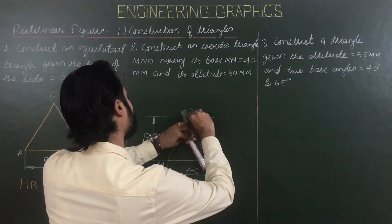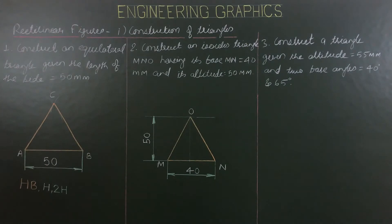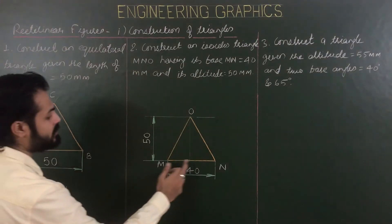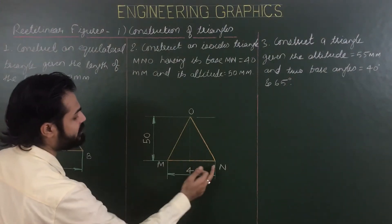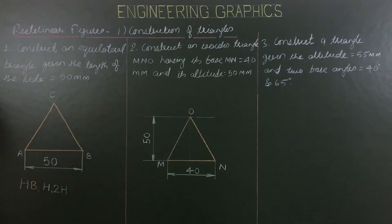From O, draw a straight line to M for the second side and from O to N for the third side of the triangle. This is the final answer — an isosceles triangle MNO with base MN of 40 mm and height or altitude of 50 mm.